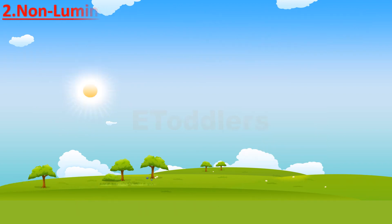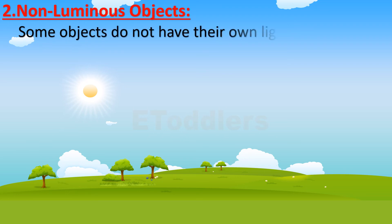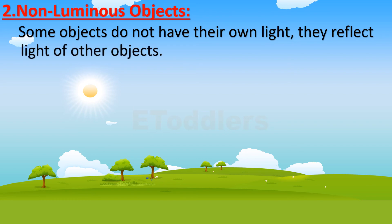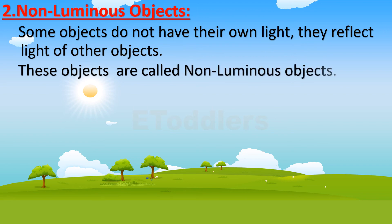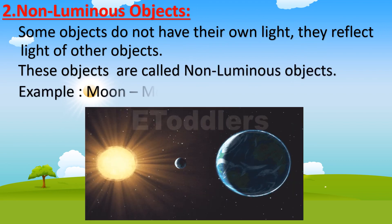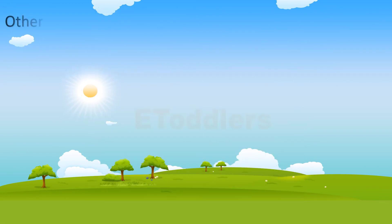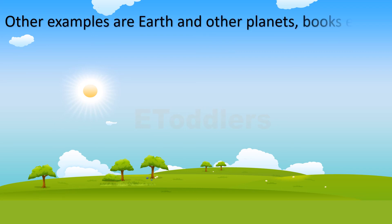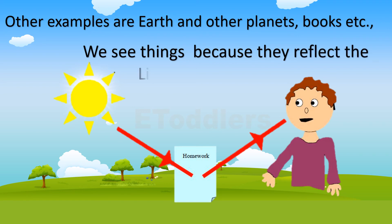Non-luminous objects are objects that do not have their own light. They reflect light from other objects. For example, the Moon reflects light from the Sun. Other examples are Earth and other planets, books, and so on. We see these things because they reflect light into our eyes.